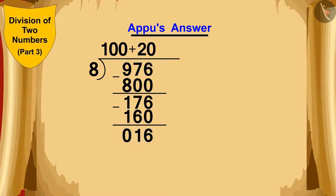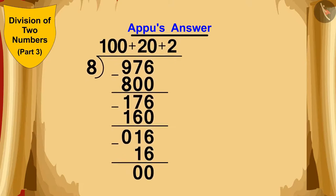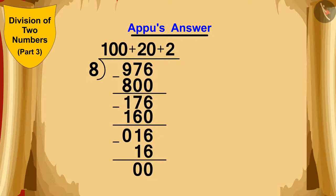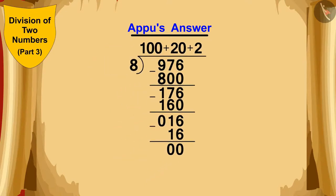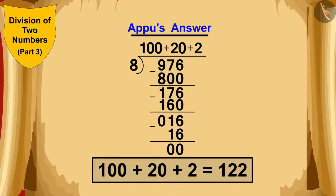he deducted 160 from 176 and wrote 16 at the bottom. Now, finally, Appu saw that 8 times 2 is 16. And he quickly wrote down 2 at the top, and he deducted 16 from 16 and wrote 0 at the bottom. In this way, according to the process of Appu's division, the 976 chairs can be equally divided into rows of 8 chairs each by adding the numbers 100 plus 20 plus 2, that is 122 rows.